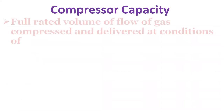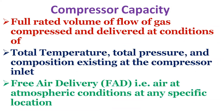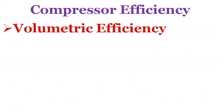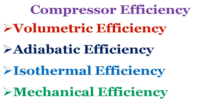The capacity of a compressor is the full rated volume flow of gas delivered at conditions of total temperature, total pressure, and composition at the compressor inlet — also called Free Air Delivery (FAD). Because altitude, barometric pressure, and temperature vary by location, FAD does not mean air under identical standard conditions. Several efficiency measures are used: volumetric efficiency, adiabatic efficiency, isothermal efficiency, and mechanical efficiency.